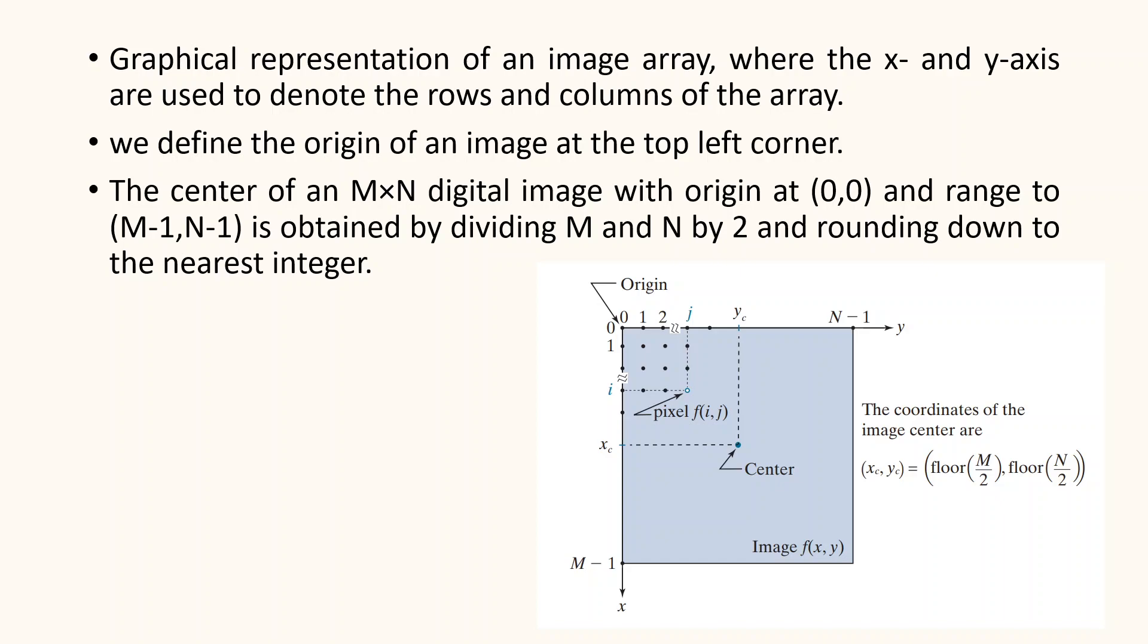Now, in the figure, you will notice that the origin of an image is at the top left corner. This is a convention based on the fact that many image displays like TV monitors sweep an image starting at the top left and moving to the right one row at a time.